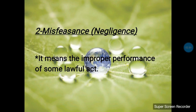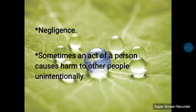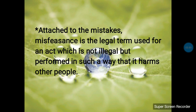The second kind is misfeasance, which simply means negligence. When a person neglects someone or is not exercising the care which he was bound to do, it means improper performance of some lawful act. He was obliged to perform properly, but he is performing improperly. Sometimes an act causes harm to other people unintentionally. The major difference between malfeasance and misfeasance is that in misfeasance there is no intention — it is unintentional, just negligence.